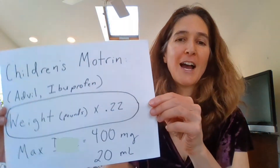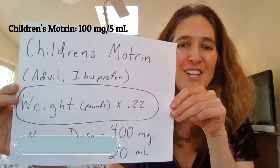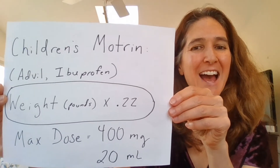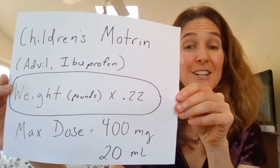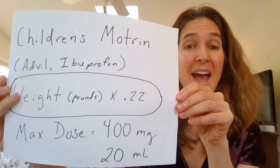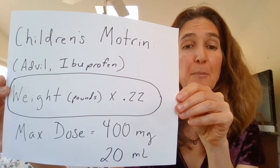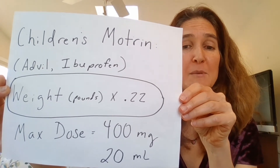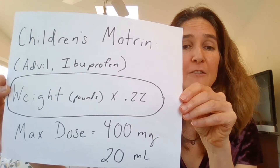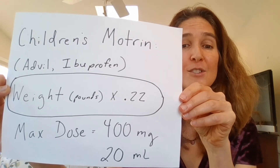We're going to start with how to dose children's Motrin, which comes in a general concentration of 100 milligrams per 5 mLs. Here is my little cheat sheet. Children's Motrin — otherwise known as Advil or ibuprofen — to do this quick calculation, take your child's weight in pounds and multiply by 0.22. That's weight in pounds times 0.22, and that will give you the dose in milliliters of children's Motrin.